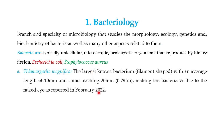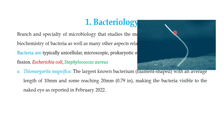One exception is a bacterium reported in February 2022 named Thiomargarita magnifica — the largest known bacterium to mankind. It is filament-shaped with an average length of 10 millimeters, sometimes reaching 20 millimeters (about 0.79 inches), making it visible to the naked eye. This is an image of Thiomargarita magnifica, which does not fit the typical classification of bacteria as microscopic.